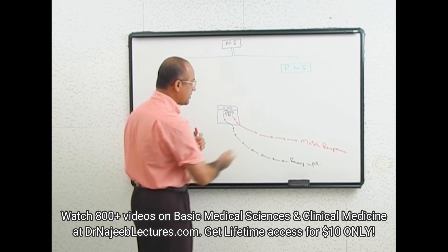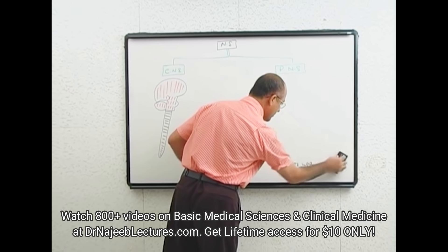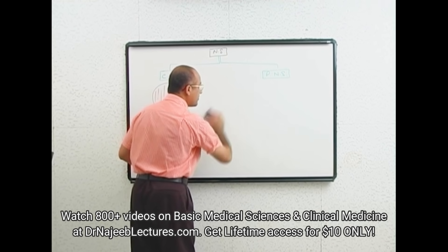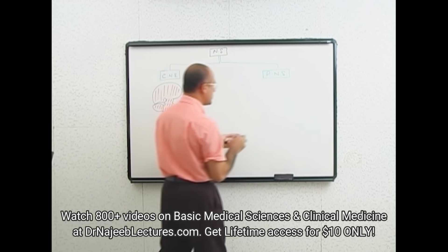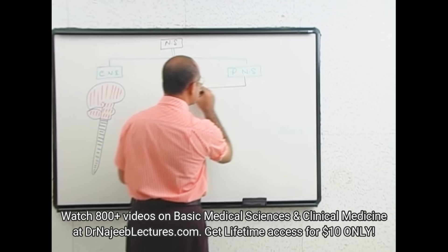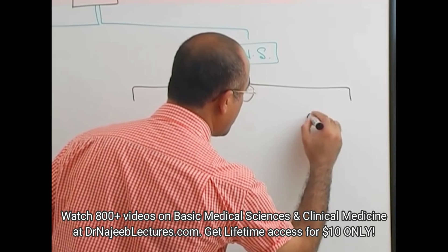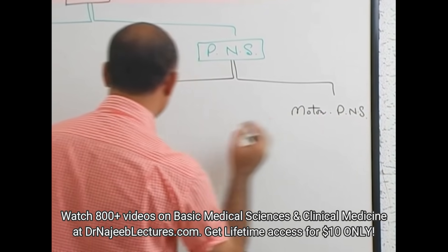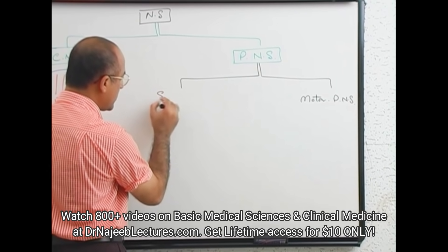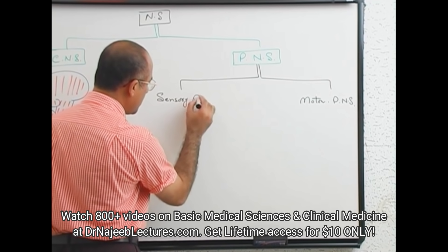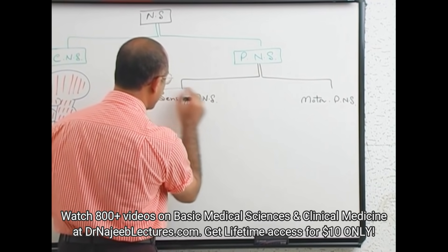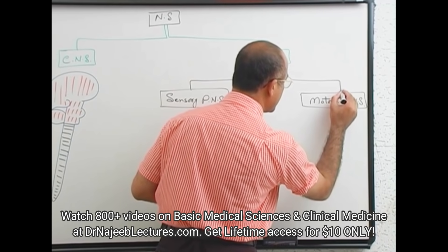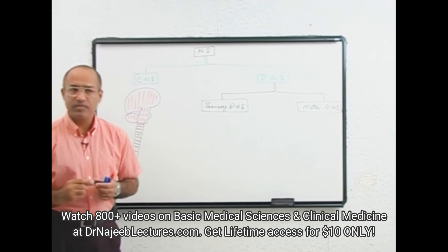The duty of the peripheral nervous system is to take information from the periphery to the center, plus take motor decisions from the center to the periphery. The peripheral nervous system is naturally divided into two parts: a motor peripheral nervous system and a sensory peripheral nervous system.